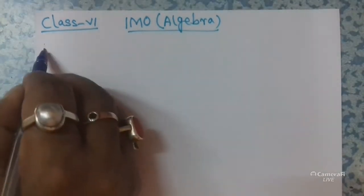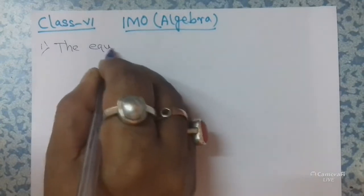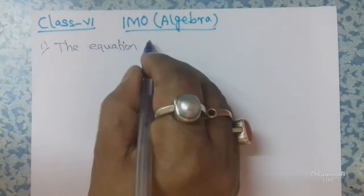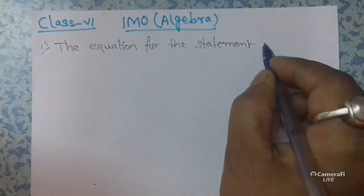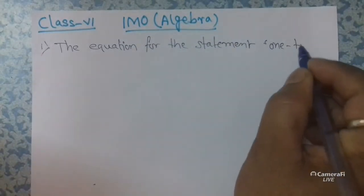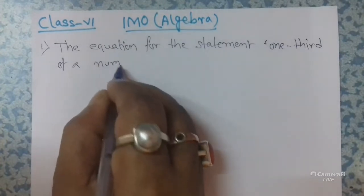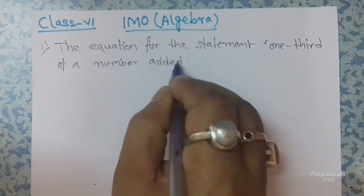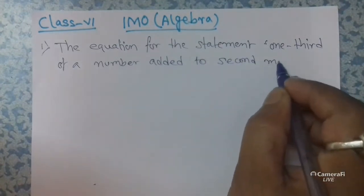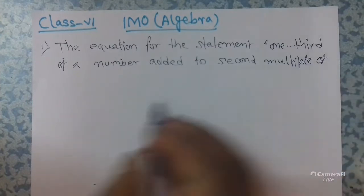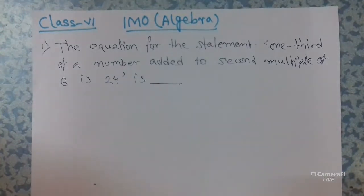Today's first problem is: find the equation for the statement — one third of a number added to the 2nd multiple of 6 is 24.